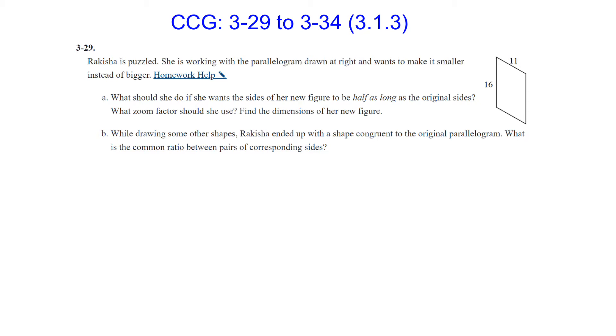Rika Shaw is puzzled. She is working with the parallelogram drawn at the right and wants to make it smaller instead of bigger. Part A: What should she do if she wants the sides of her new figure to be half as long as the original sides? What zoom factor should she use? If she wants the sides to be half as long, her zoom factor should be 0.5. So the side that corresponds with the 16 should now become 8, so half, and then half of 11 would be 5.5. This would be 8, and this side length would become 5.5.